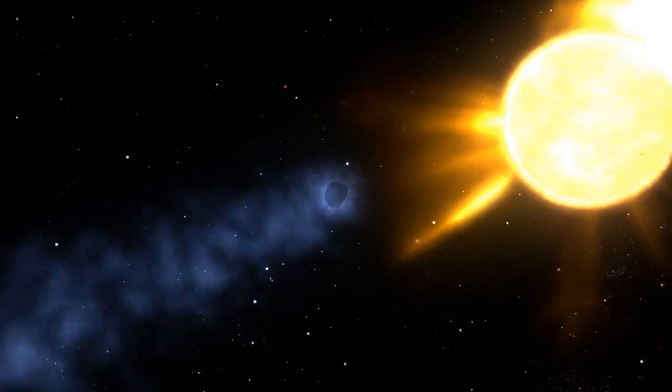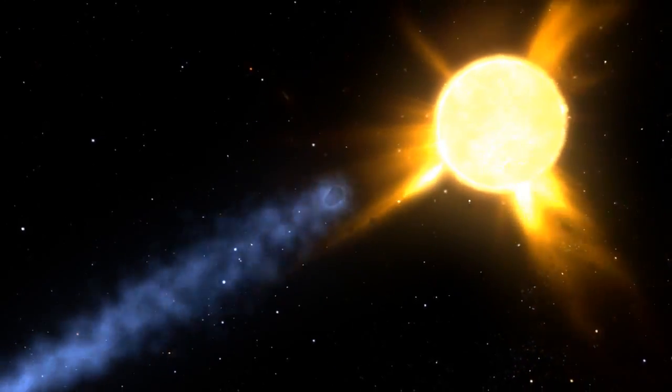Like a comet, our solar system has a tail. It has never actually been observed until now.